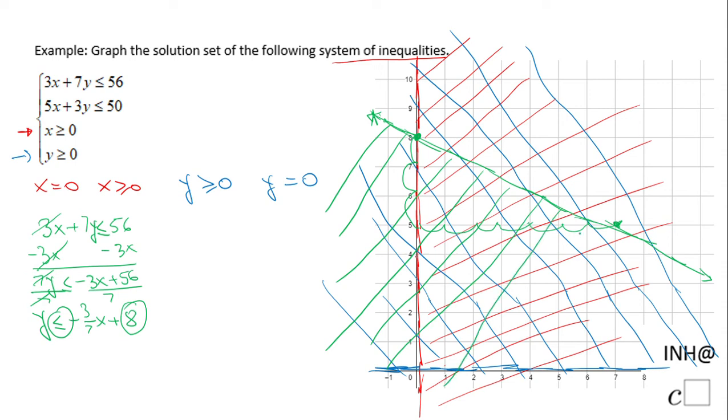Because the sign is less or equal, I'm gonna shade it under this line. You already notice you have a bunch of shadings here; it can be confusing. And guess what, we have to do one more. We did this one, which is the second one: 5x plus 3y less or equals 50.